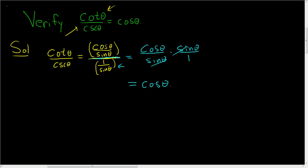So again, a good strategy is to start with one side and show it's equal to the other side. In this case, we chose this side because starting with cosine seems like a bad idea — it would be very difficult. In general, you should start with the most complicated side. That usually works, and that's what we did here.